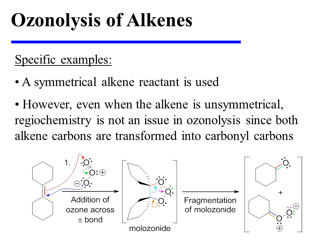The molozonide fragments via three mechanistic arrows. The carbon-carbon sigma bond of what used to be the alkene breaks, and those electrons form a carbonyl pi bond. This cleaves the weak oxygen-oxygen bond, and those electrons are pushed onto one oxygen as a lone pair. Finally, the last oxygen of the molozonide donates a pair of electrons to the carbon that would otherwise have lost a bond. Two fragments result from this molozonide cleavage, however they will quickly recombine.